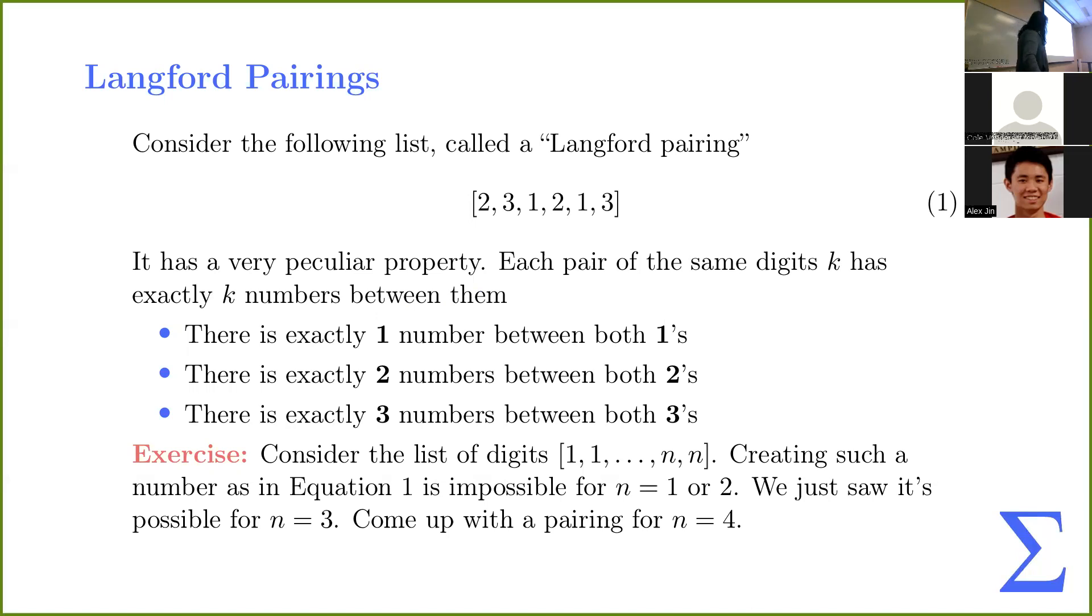So for the interest of time, here are both of them. And you'll see that they're reverses of each other. So we'll just say there's really one. So yeah, there's four numbers between the fours, three numbers between the threes, two numbers between the twos, and one number between the ones. And this is the only pairing for n is equal to four. So it's like this strange arrangement of these integers in a list.